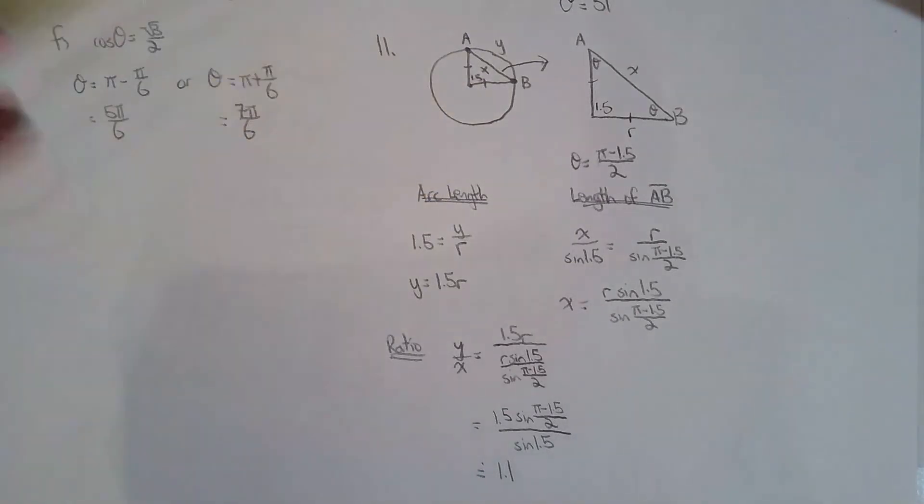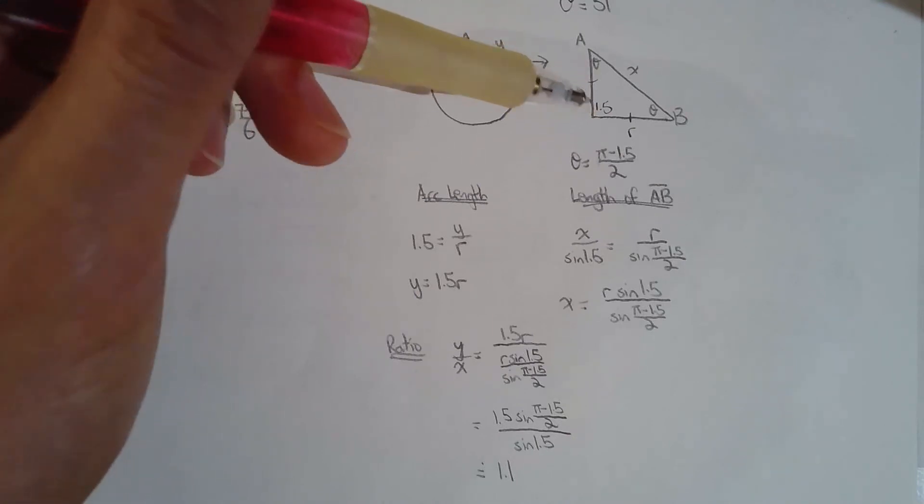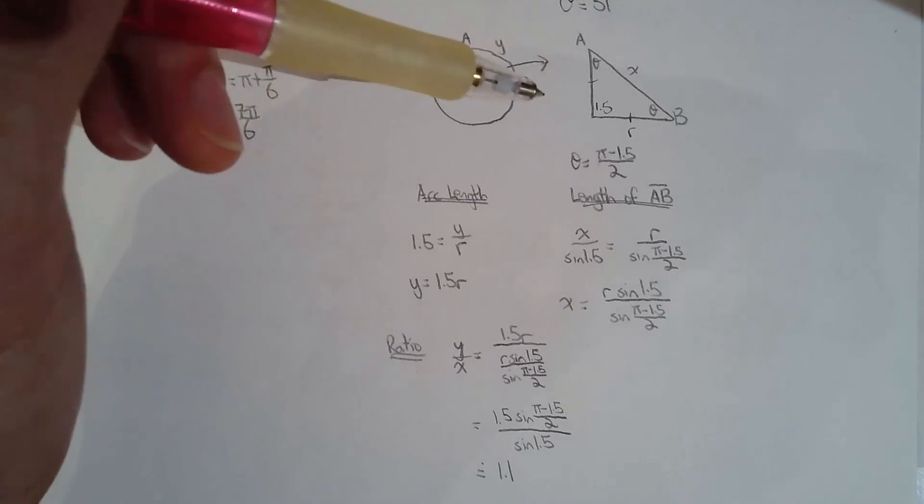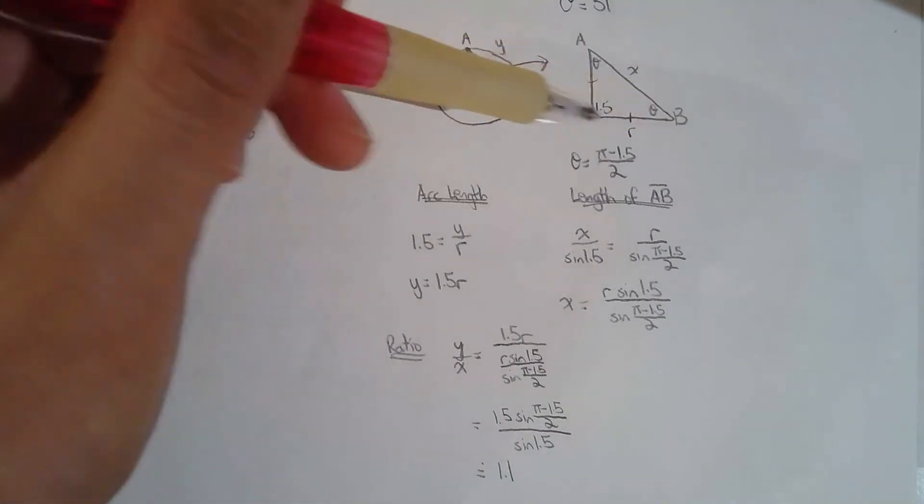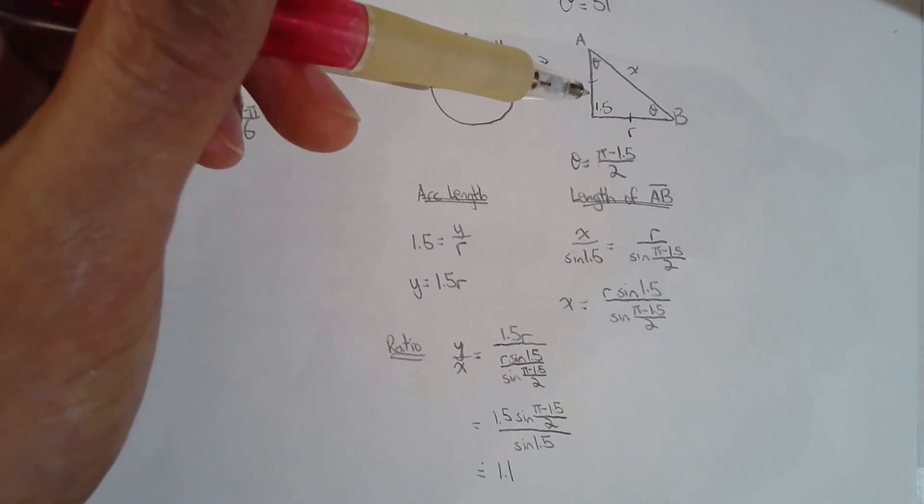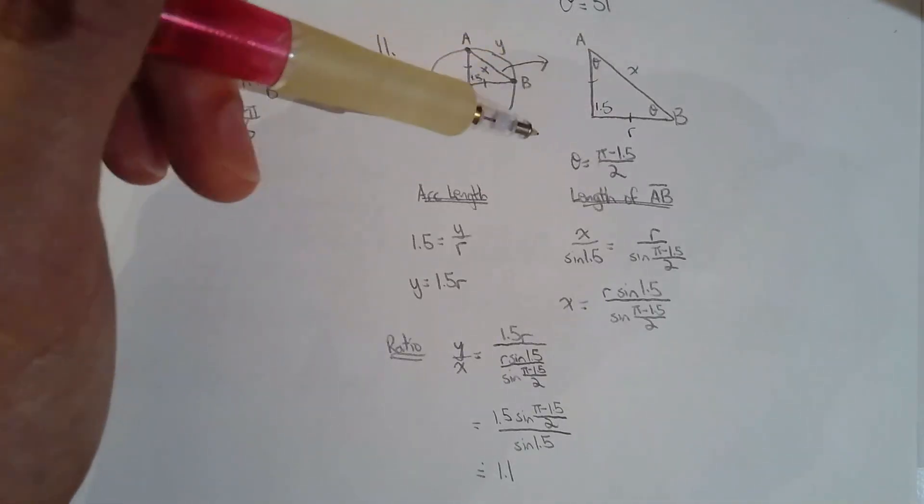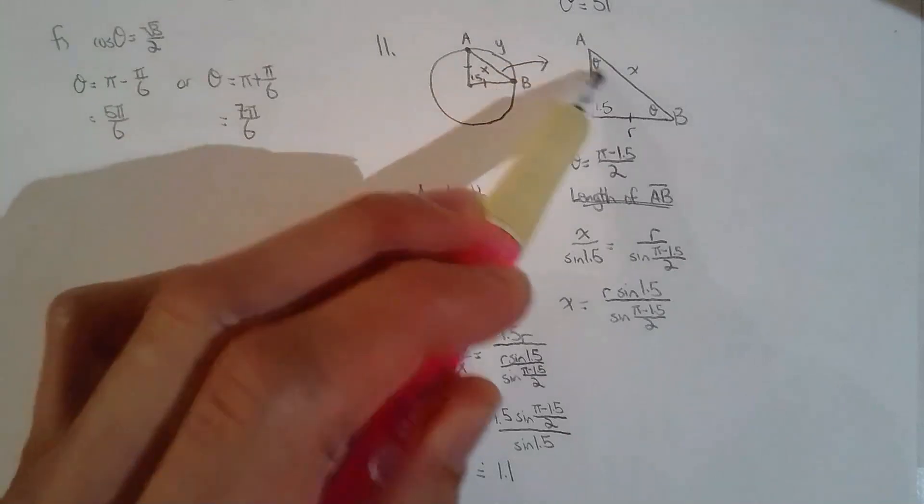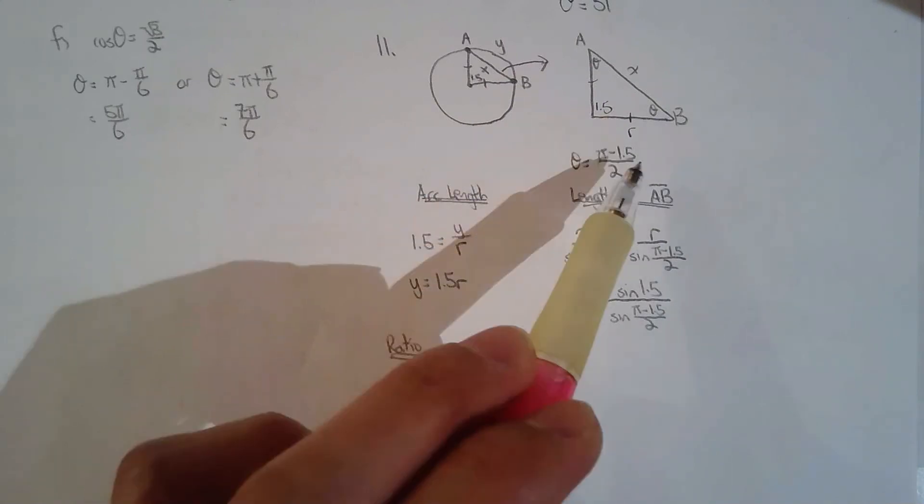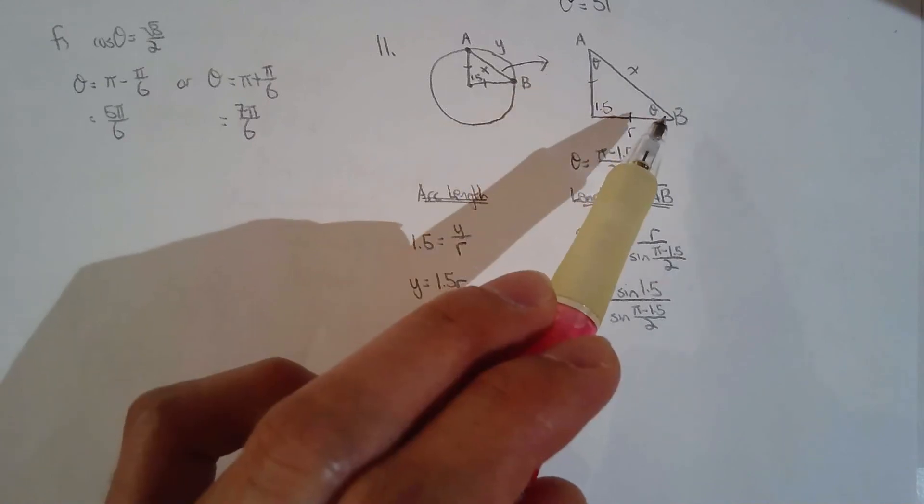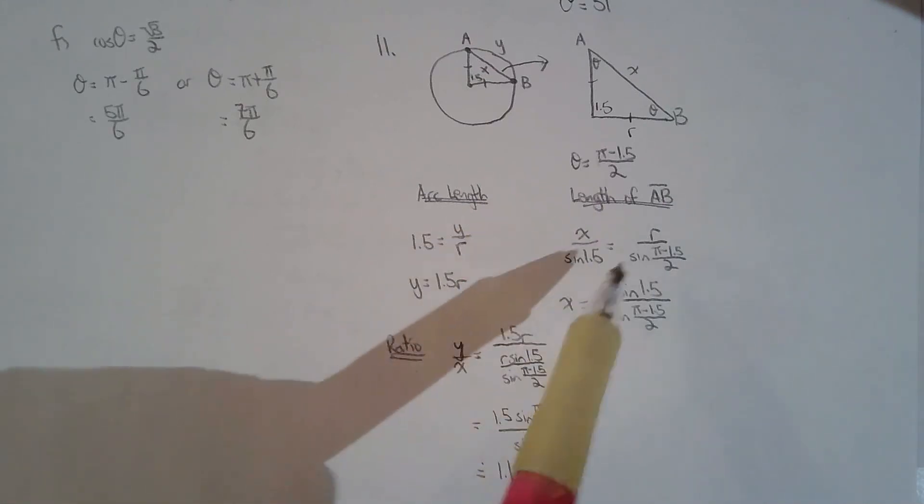Now what about the line segment AB? Now be careful, this is not a right triangle. It's actually pretty close to being a right triangle but it's not. Now even though it's not a right triangle, the good news is that it's an isosceles triangle because these two lengths are equal because they're both the radius of the circle. So how do I solve for the length of the line segment AB? I'm going to use the sine law. Now what are these two angles? These two angles are congruent because it's an isosceles triangle, so (π - 1.5 radians)/2 will give me the size of θ. I needed to know θ because I'm going to use the sine law.